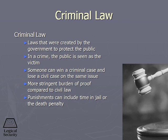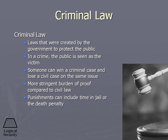The next type is criminal law — laws created by the government to protect the public, where the public is seen as the victim. This has a more stringent burden of proof, and can include not only financial penalty but jail time or even a death penalty. The third type of law in the United States is administrative law — regulatory compliance, such as the Food and Drug Administration, OSHA, HIPAA, Sarbanes-Oxley, and Gramm-Leach-Bliley. These are generally punished by financial penalty or may even merit imprisonment in the more severe cases.